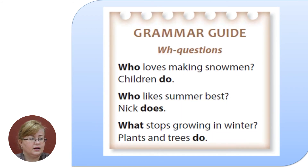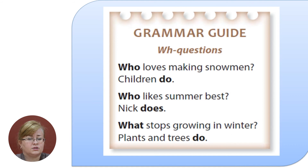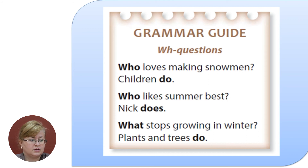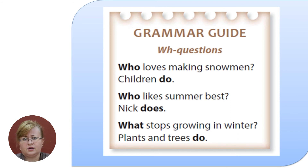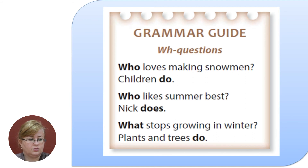Grammar guide — something interesting and easy to use. We have questions: who and what? These are questions for the subject. Who loves making snowmen? Children do. Who likes summer best? Nick does. We use 'who' when we speak about people, and 'what' when we speak about things or phenomena. For example, what stops growing in winter? Plants and trees do.